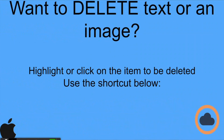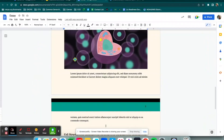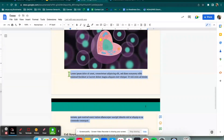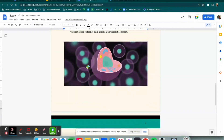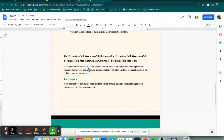How to delete text or an image on a Mac — I'm going to show you the shortcut Command+X. Let's say I did not want this text or this image right here. I'm going to highlight the text and then Command+X to get rid of it. If I would like to get rid of that image, I need to click on it, highlight it, Command+X, and now it's gone.